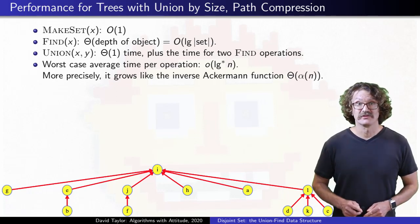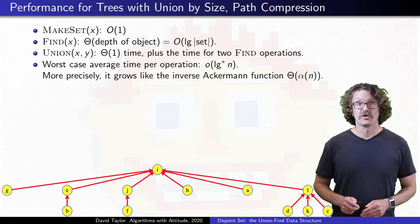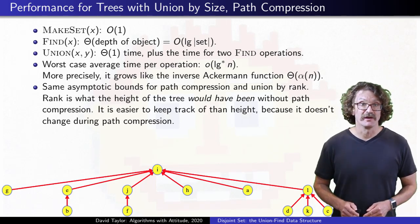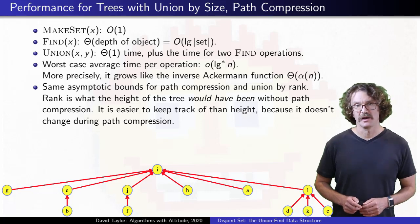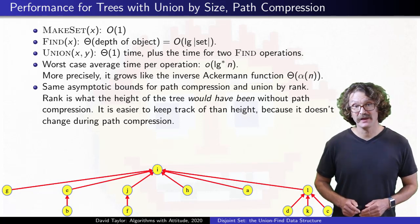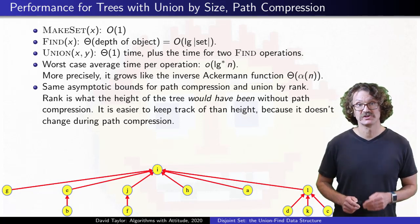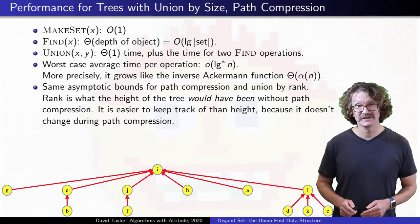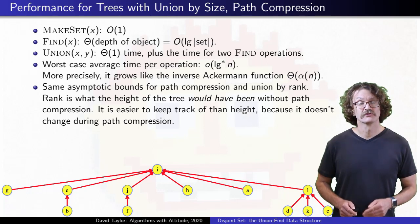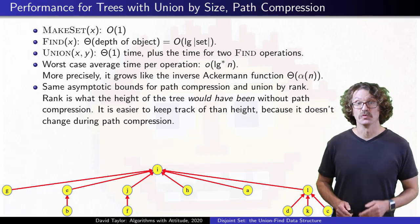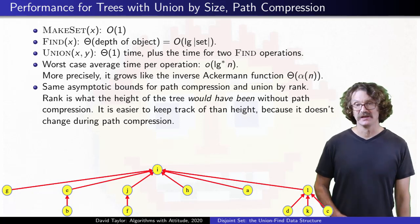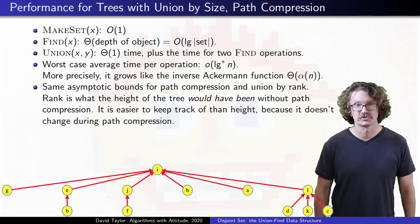The Cormen text, and others, use something called union by rank instead of union by size, which has the same asymptotic bounds. If you didn't have path compression, the rank of a set would just be its height, but once you add path compression, keeping track of height can hurt your efficiency, so rank is what the height would have been on the same operations if there was never any path compression. It is easy to track.